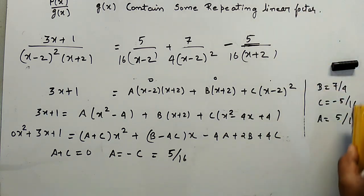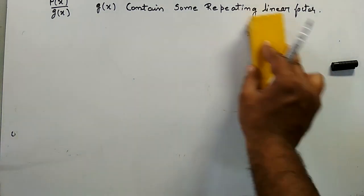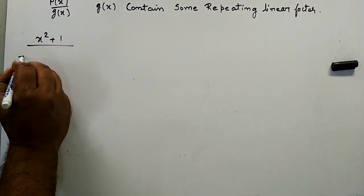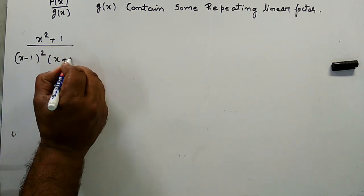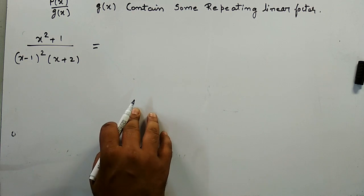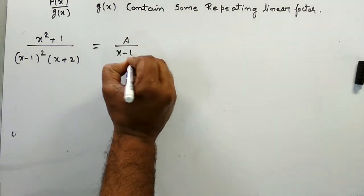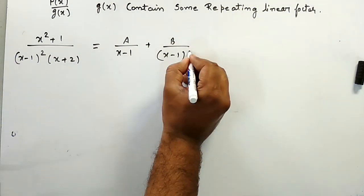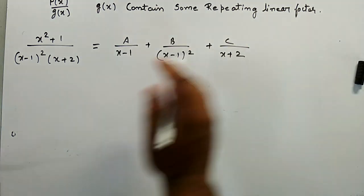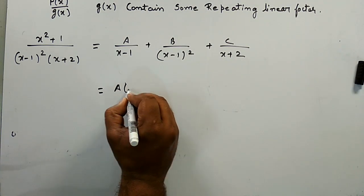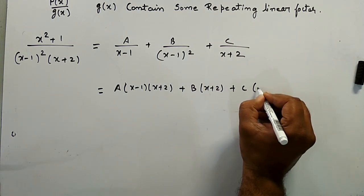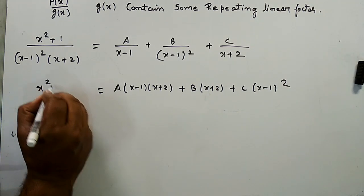Now I am taking another example: (x² + 1) / [(x - 1)²·(x + 2)]. Applying the same concept, the partial fraction form is: A/(x - 1) + B/(x - 1)² + C/(x + 2). Taking the LCM, we get: A·(x - 1)·(x + 2) + B·(x + 2) + C·(x - 1)² = x² + 1.